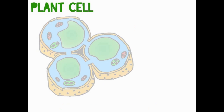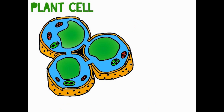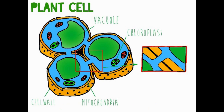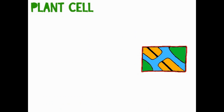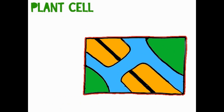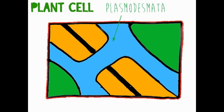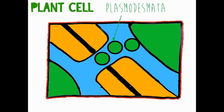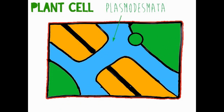Plasmodesmata are channels found in plant cells and are similar to gap junctions. They also allow inorganic ions and other small water-soluble molecules to pass directly, along with some organelles. They connect the cytoplasm of these adjacent plant cells.